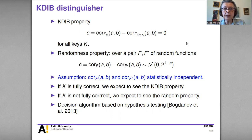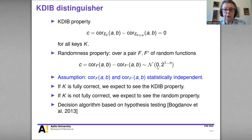They used a multiple linear cryptanalysis approach to build a distinguisher. For the distinguisher, we need to know the random behavior and the expected behavior from the cipher. From the cipher we expect the KDIB property, while for a random pair of functions the mean is also expected to be zero, but the variance is larger: 2 to the power of 1 minus n.